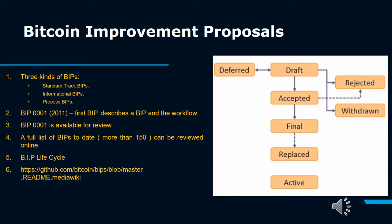2. Informational BIP: Such types of BIPs highlight the design issues, general guidelines, and supporting information. Informational BIPs, as the name suggests, are just for information's sake and can be taken seriously or ignored by the community. An example of this is BIP-32.